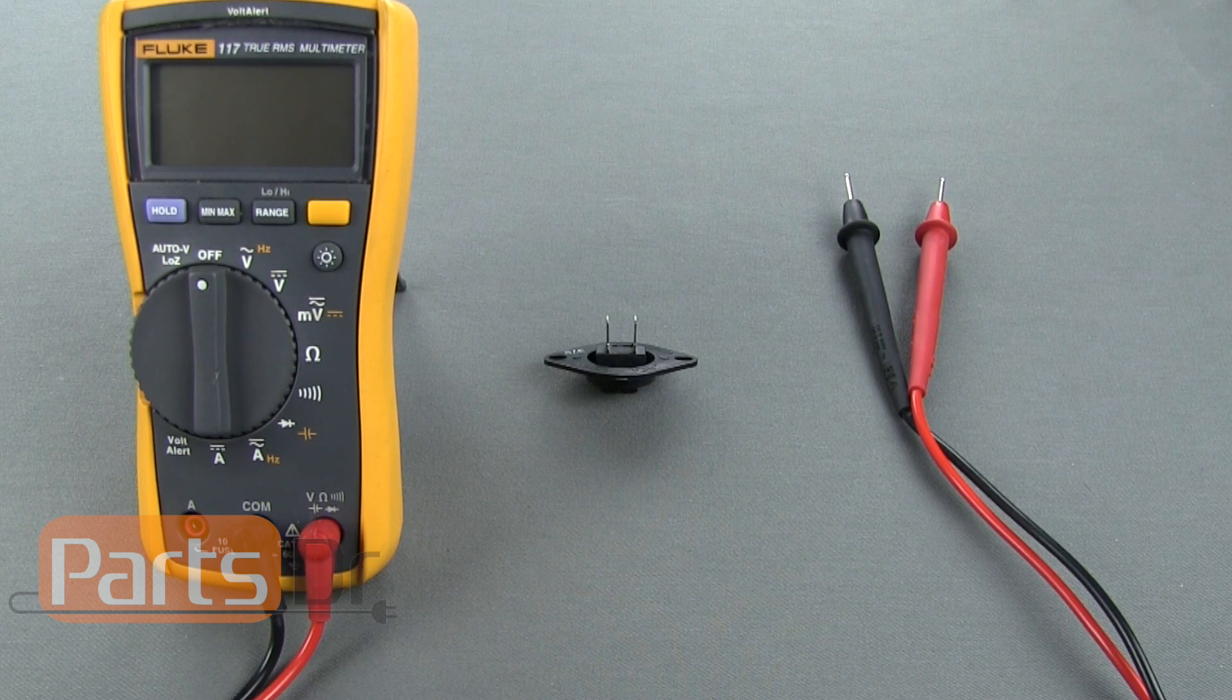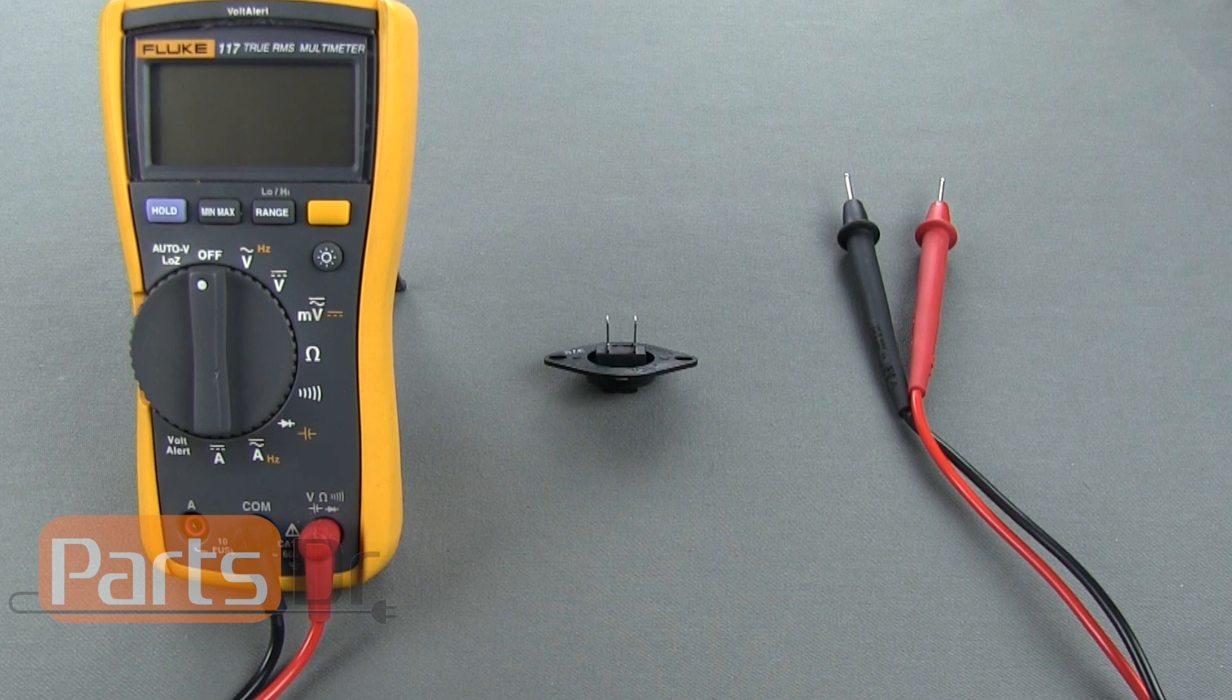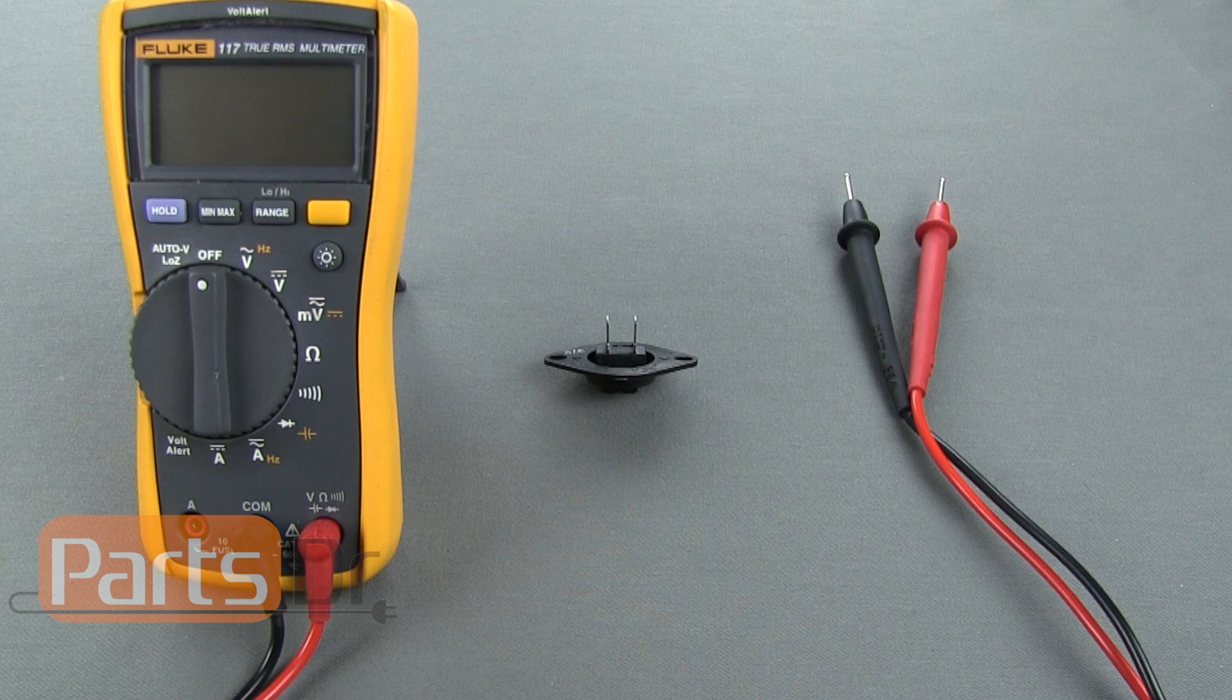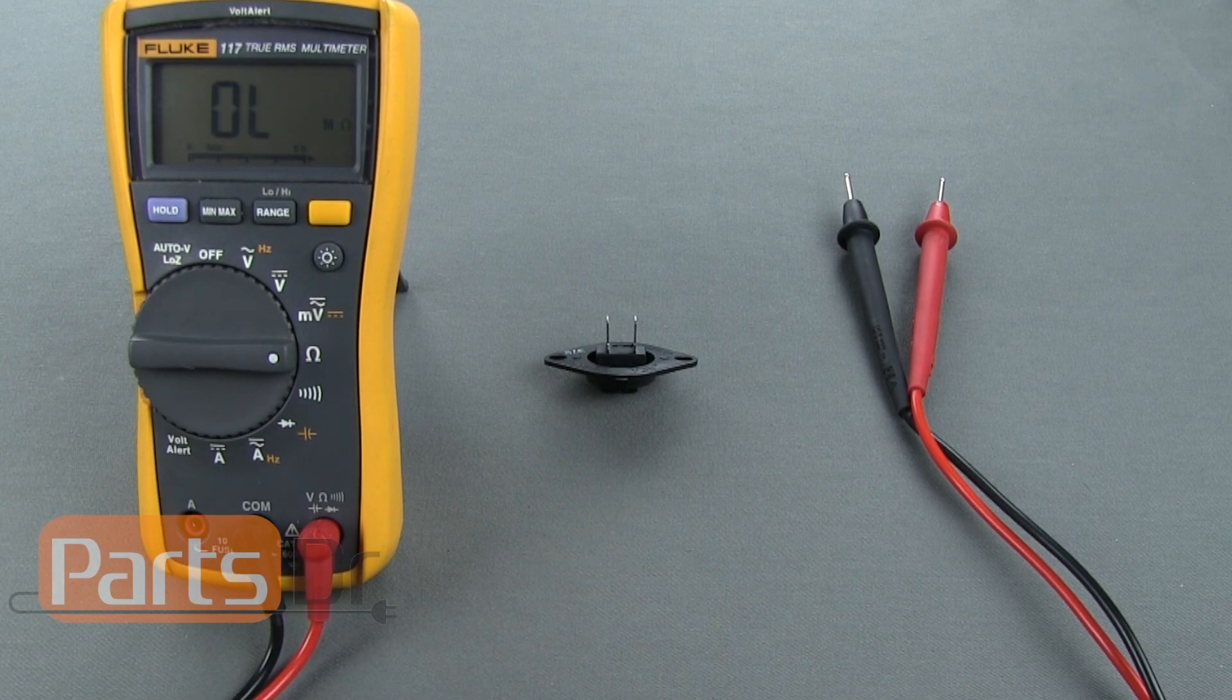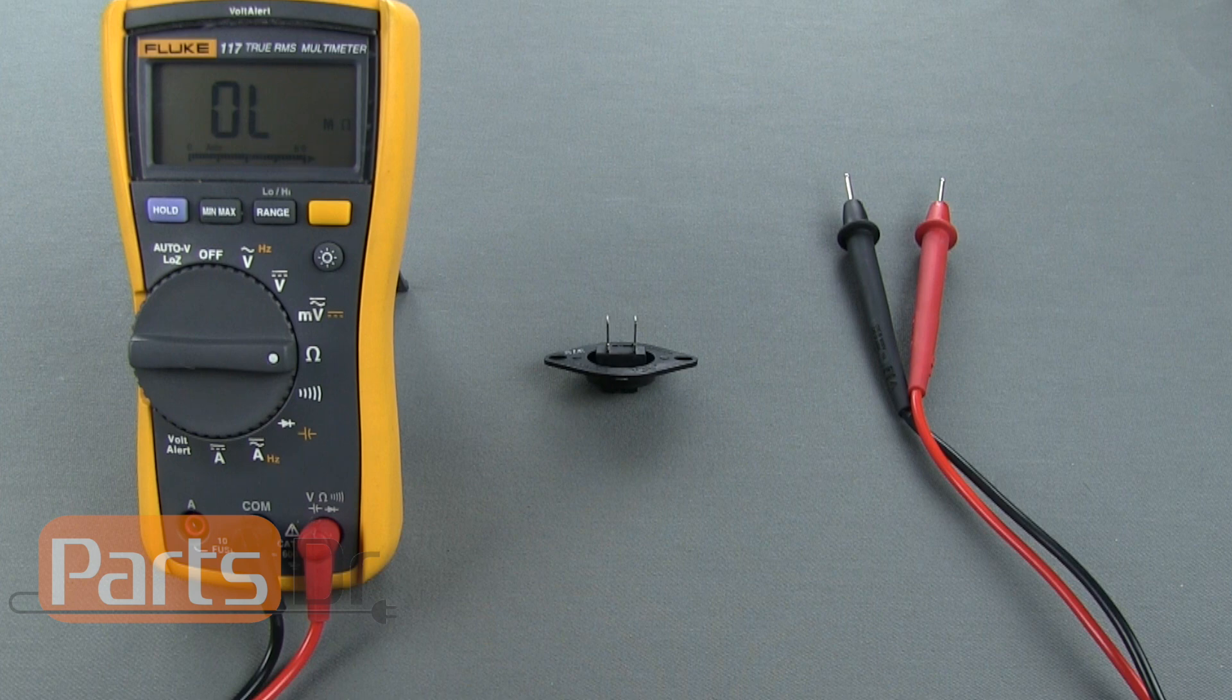Using a multimeter you'll need to do an ohm test to check the resistance of the thermistor. If you have an auto-ranging multimeter then turn the meter to the ohm setting. If you have a manual ranging multimeter you'll need to set the meter to the 20k setting.